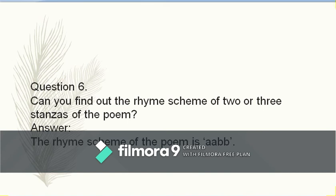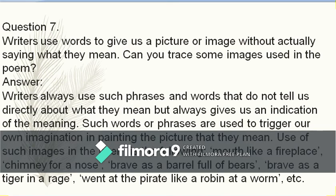Can you find the rhyme scheme of two or three stanzas? The rhyme scheme is A-A-B-B, always written in lowercase. Writers use words to give us a picture or image without directly stating what they mean. Some images used in the poem: 'mouth like a fireplace,' 'chimney for a nose,' 'brave as a barrel full of bears,' 'brave as a tiger in a rage,' 'went at the pirate like a robin at a worm.' Though these use 'like' making them similes, they are also creating vivid images in our mind — so they can be called imagery.